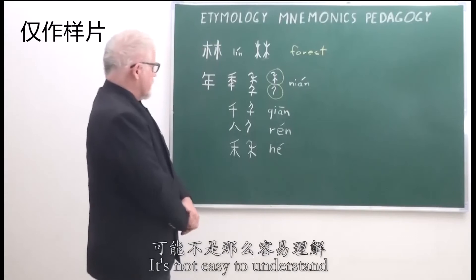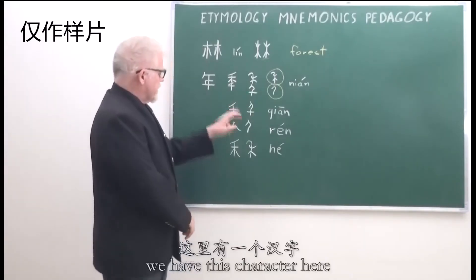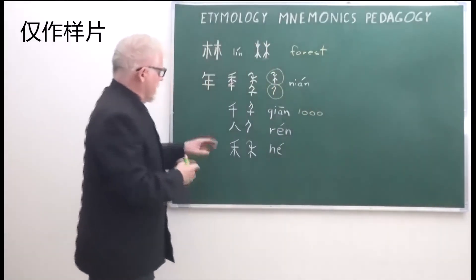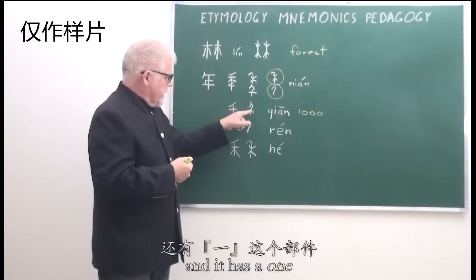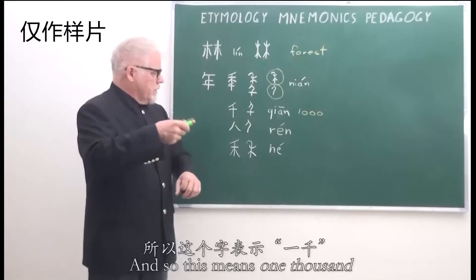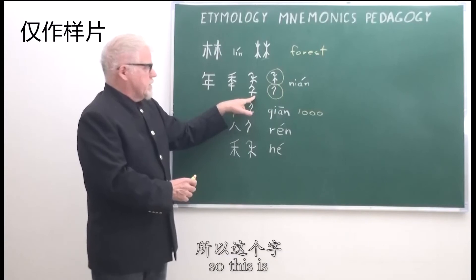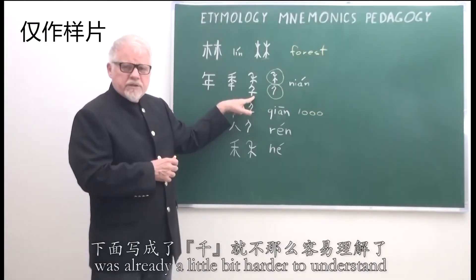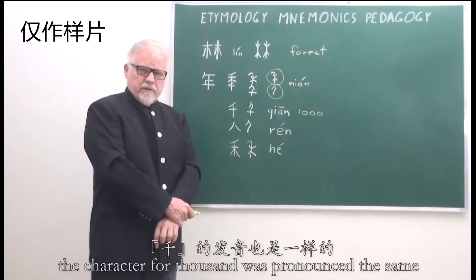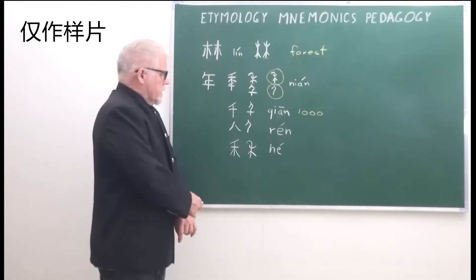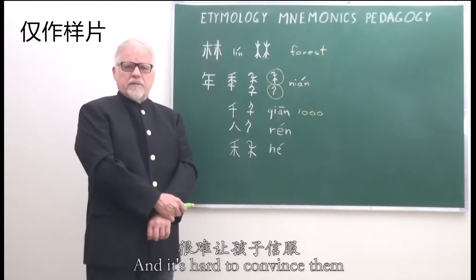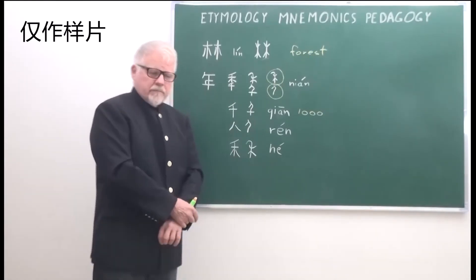But for the modern Chinese it's not easy to understand. If we go back two thousand years, we have this character here, which means a thousand. The explanation is that it's a man pronounced ren, and it has a one. Two thousand years ago, ren and qian were pronounced the same, so this means one thousand. The character for year had changed, so two thousand years ago it was already a little bit harder to understand. For teaching a modern Chinese child, the problem is that pronunciation has changed radically, and it's hard to convince them that qian and ren are the same pronunciation — because in modern Chinese, they aren't.